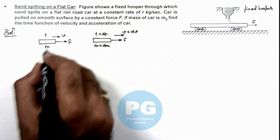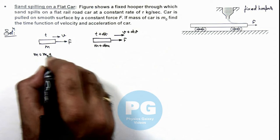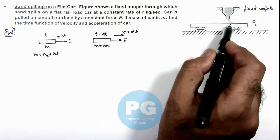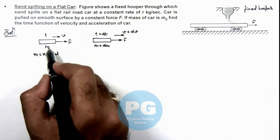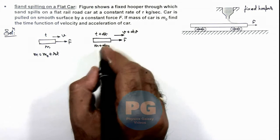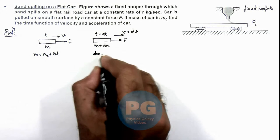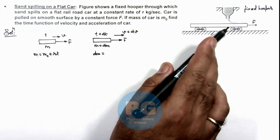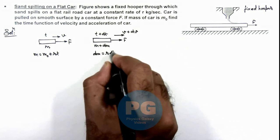Here we can write the value of m is equal to m₀ plus rt, because the sand is spilling at a rate of r kg per second. So at time t, the total mass of this cart would be m₀ plus rt. And we can write dm is the mass of sand falling on this cart in time dt, which can be written as r dt.